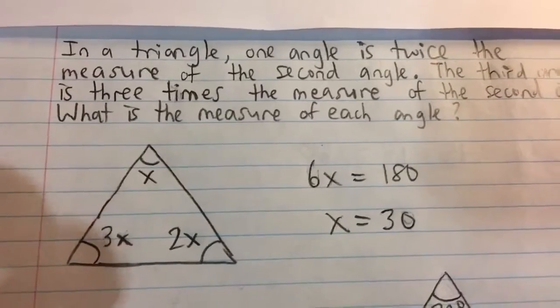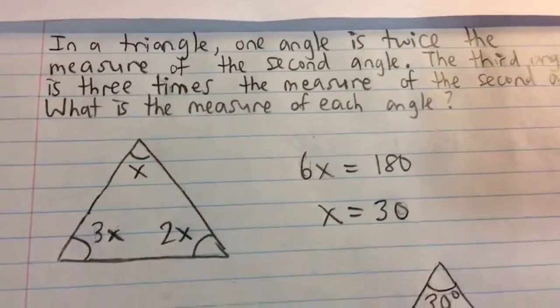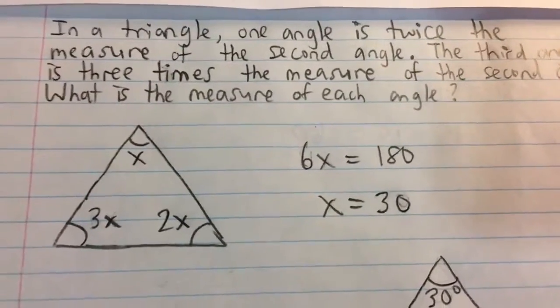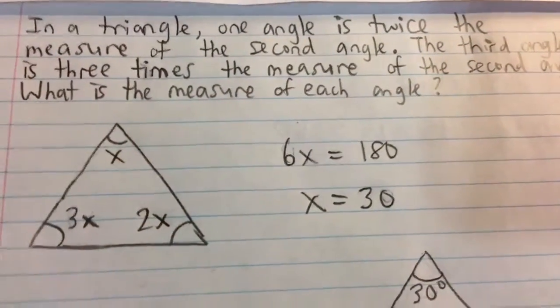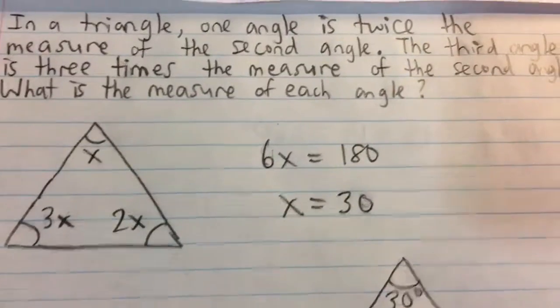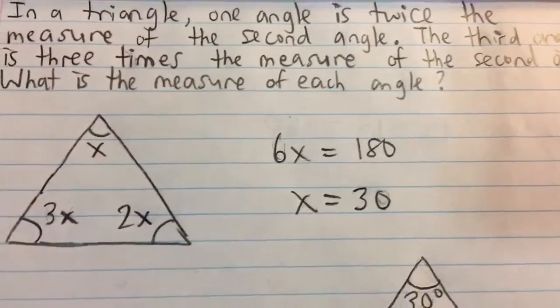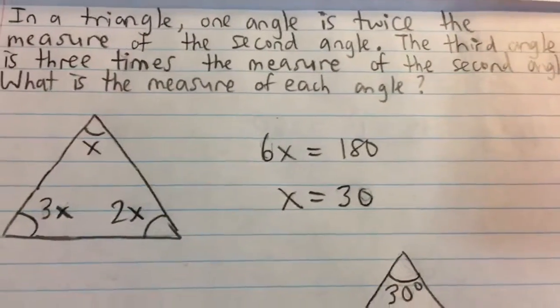So now we have an expression for all three of the angles. We know that all three angles in a triangle have to sum to 180 degrees, and so we can say that 3x plus 2x plus x, that's 6x, that's equal to 180. And so if we divide both sides by 6, we can easily solve for x, which is x equals 30.